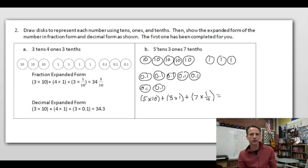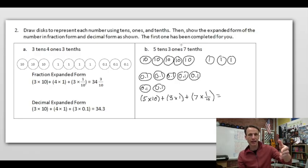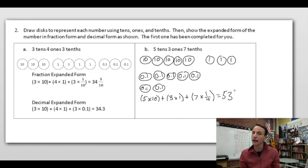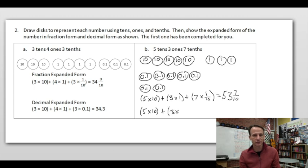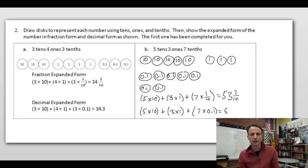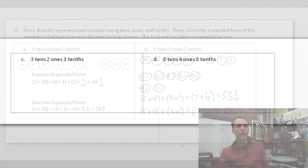To write this in fraction expanded form: we have five tens — five times ten — plus three ones — three times one — plus seven one-tenths — seven times one tenth, written as the fraction one tenth. In unit form, that's fifty-three and seven tenths, which we write as the mixed number fifty-three and seven tenths. In decimal form, whole numbers stay the same; only the one tenth changes — seven times one tenth written as a decimal, giving us 53.7.